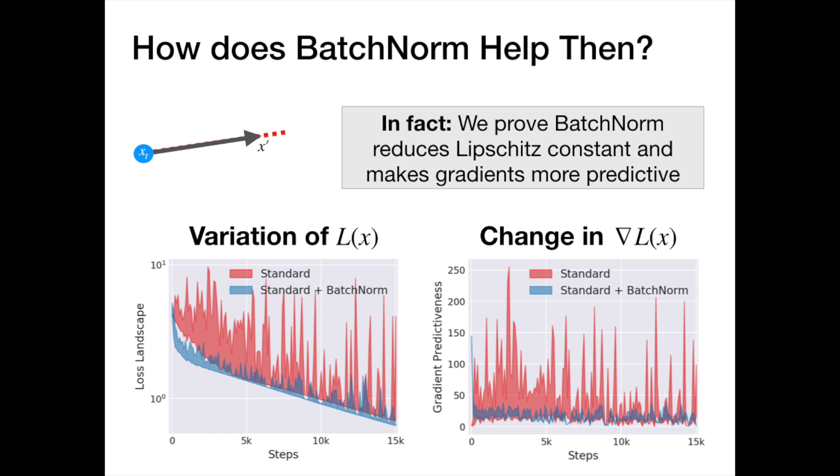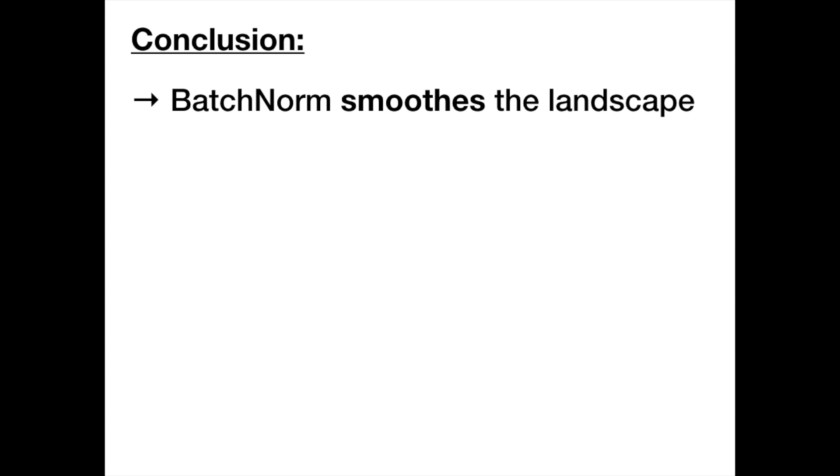By looking at the gradient update that batch norm induces, we can actually show that batch norm has a provable beneficial effect on the optimization landscape. Our results lead us to conclude that the roots of batch norm success may be in its smoothing of the optimization landscape.